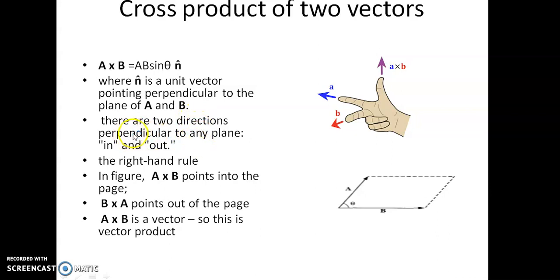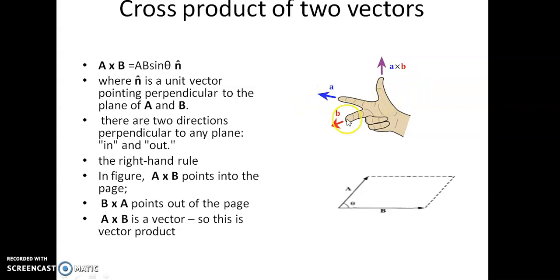We know that there are two directions perpendicular to any plane — in and out. So the actual direction of A cross B can be found using the right-hand rule. In the right-hand rule, if the fingers of the right hand point in the direction of the first vector and curl toward the second vector through the smaller angle, then the direction of the thumb gives the direction of A cross B. Alternatively, point the four fingers along A and the middle finger along B, then the thumb gives the direction of A cross B.